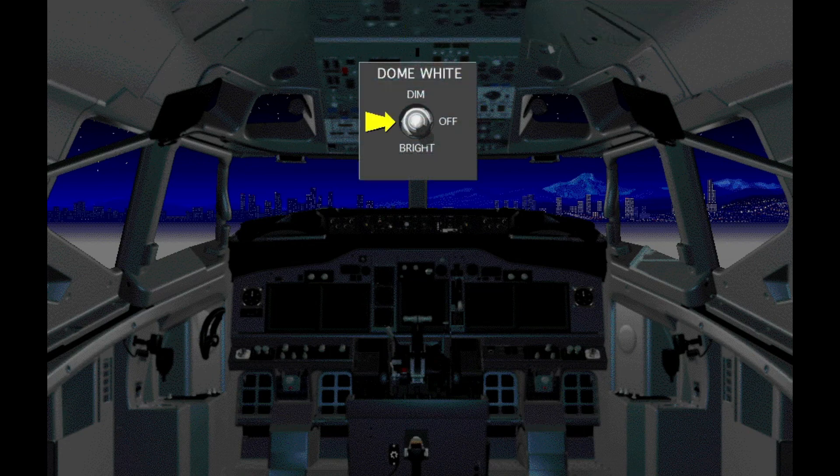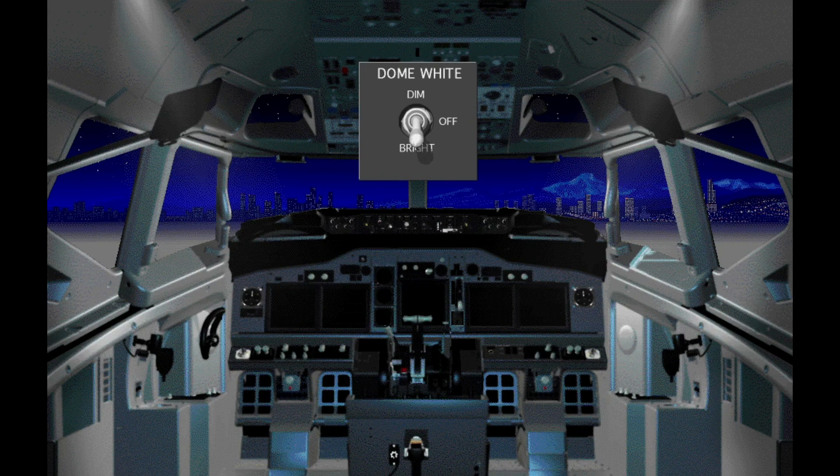The switch for the dome lights is on the aft overhead panel. The dome white light switch has three positions: dim, off, and bright. The dome lights illuminate all of the flight deck.